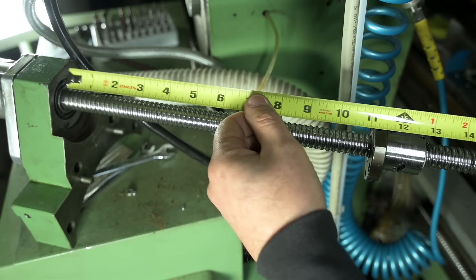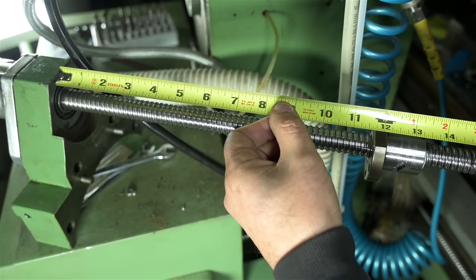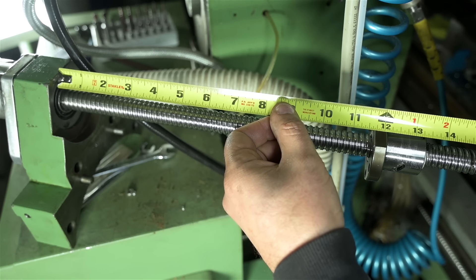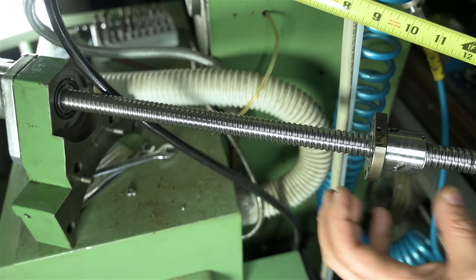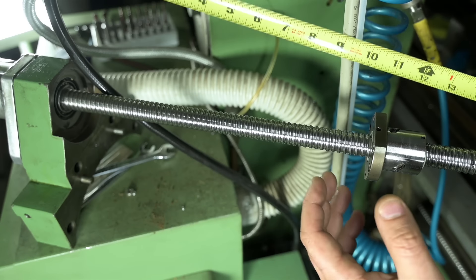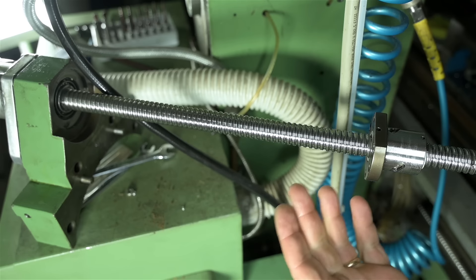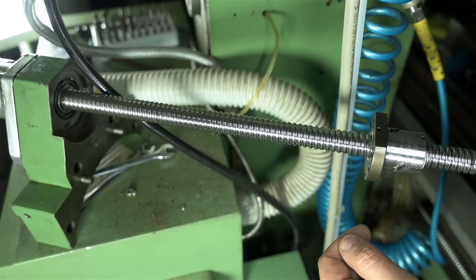Before I take this nut off, I'm just going to make note of where it is along the screw. 11 and 11 sixteenths are pretty much spot on. That's not super important, but once I reinstall it, I want to put it in the same place. I'm not going to move the Y axis of the machine. Saves me a lot of fine tuning after the fact. Normally, I'd write that down, but I've got it on video.